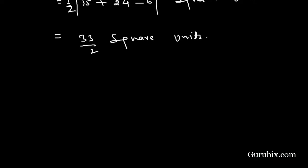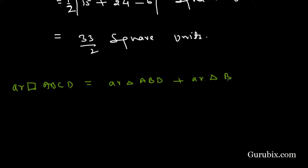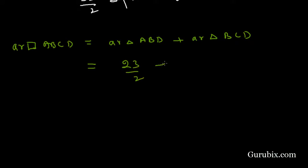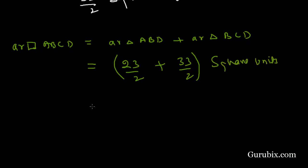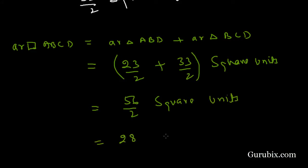Now we find the area of quadrilateral ABCD by adding the area of triangle ABD and the area of triangle BCD: 23/2 + 33/2 = 56/2 = 28 square units. So this is the solution of the question. Thank you.